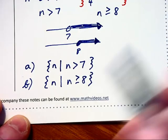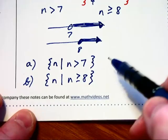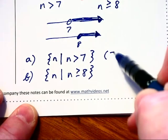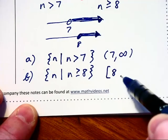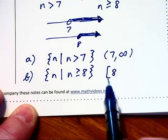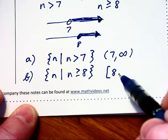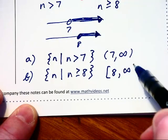Now, let's write each of these in interval notation. For part A, we will have the interval from 7 to infinity. And in part B, from 8, which we include, denoted by the open bracket, up to positive infinity.